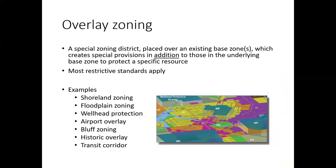In addition to general zoning, there's also overlay zoning. These are special zoning districts with certain purposes that apply in addition to the base layer, and the most restrictive standards apply. Some examples of overlay zoning include shoreland and floodplain zoning, as well as wellhead protection — an area near a municipal well where you limit uses in order to protect the drinking water quality.